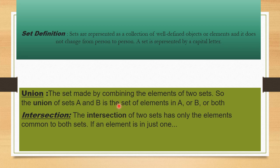For example, we will combine class 7 and class 8, so it's called union. Intersection: the intersection of two sets has only the elements common to both sets. If an element is in just one set, it's not included. For example, if 1 is in both sets, it's called intersection. Same elements in both sets are called intersection.